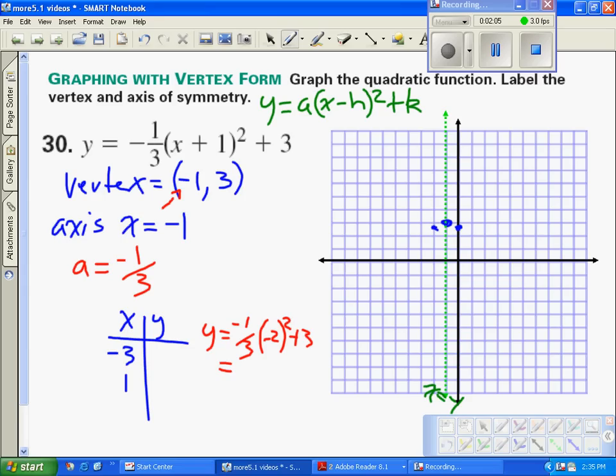Negative 2 squared is positive 4, so we have negative four-thirds plus 3. But 3 has to be written as thirds, so it's plus nine-thirds, which equals five-thirds.